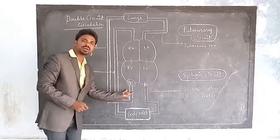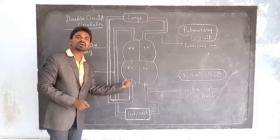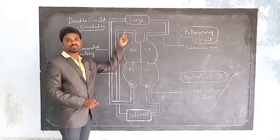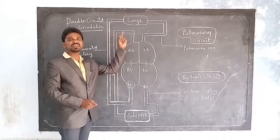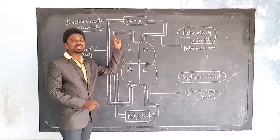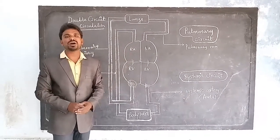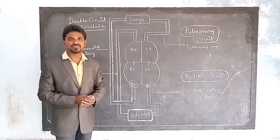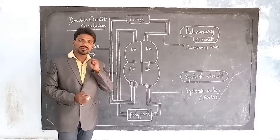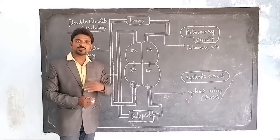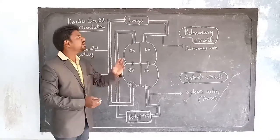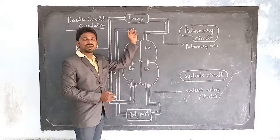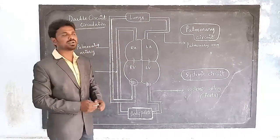The pulmonary artery receives blood from the right ventricle and carries it to the lungs. Here in the lungs, this deoxygenated blood is converted into oxygenated blood because oxygen is available in the lungs. The lungs receive carbon dioxide, release it into the atmosphere, and give oxygen to the blood. So the deoxygenated blood gets converted into oxygenated blood.